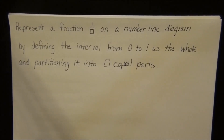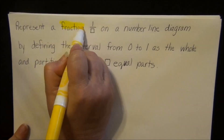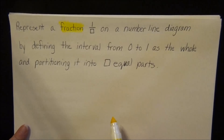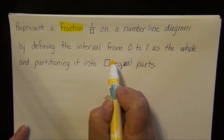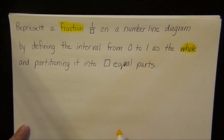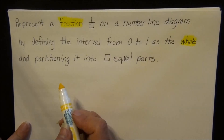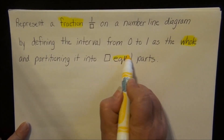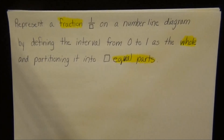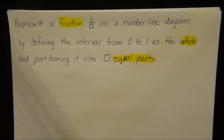There are three math words we already know in this lesson. Fraction — those are the numbers between the whole numbers. Whole — like in whole numbers, those were the numbers you learned to count in kindergarten. And equal parts — that means all the parts are the same size.